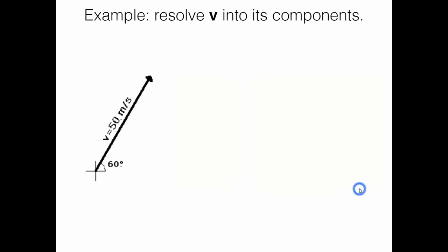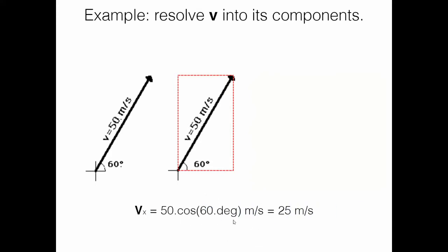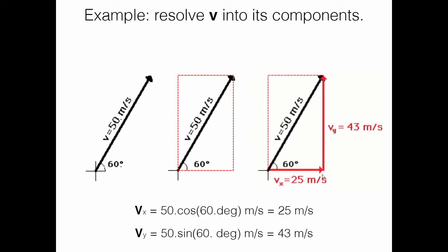Let's practice. We have a velocity vector of 50 meters per second at an angle of 60 degrees. Resolve vector v into components. First, draw the components — the horizontal and the vertical — forming a right triangle. The horizontal component v_x equals 50 × cos(60°) = 25 meters per second. The vertical component v_y equals 50 × sin(60°) ≈ 43 meters per second. So the components are 25 m/s horizontal and 43 m/s vertical.